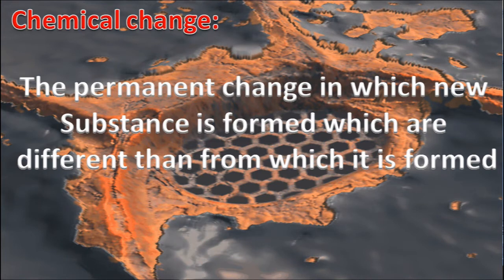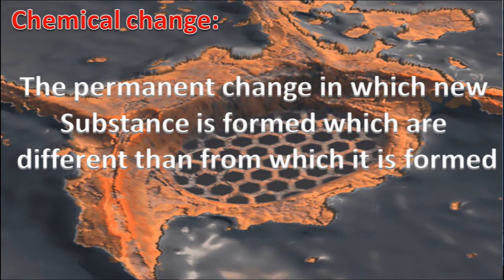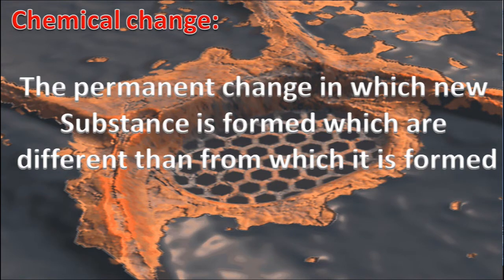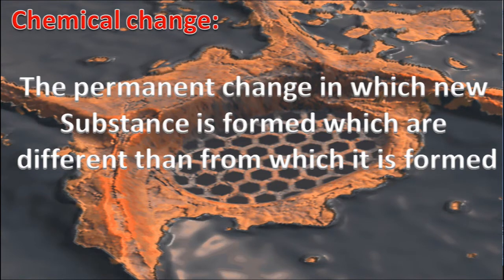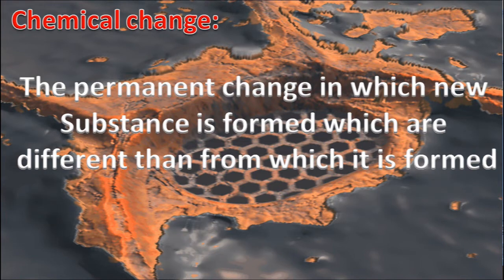Like rusting of iron — iron gets rusted in air in the presence of moisture. A new substance, rust or iron oxide, is formed. This is an example of chemical change.